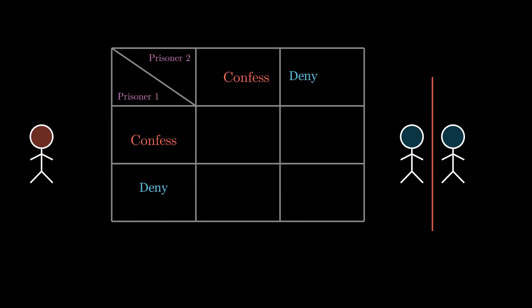If both of them confess to their crime, they get two years in prison. If one of them confesses but the other denies the crime, the one confessing gets to go free, while the one who denies the crime gets a sentence of three years for lying to the authorities.